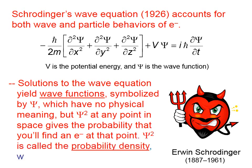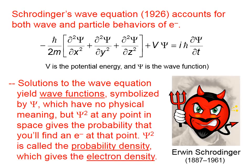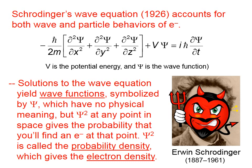Solutions to Schrödinger's equation yield wave functions, symbolized by the Greek letter ψ. Psi, as far as we can tell, has no physical meaning. However, ψ² at any particular point in space gives the probability that you'll find an electron at that point. Psi squared is the probability density, which gives the electron density.